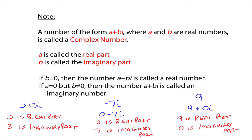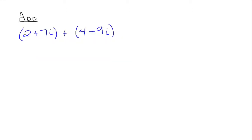Every real number we've been playing with is also a complex number — it's just that its imaginary part is 0. So our number system has been expanded: the real numbers are really a subset of the complex numbers. Every real number is a complex number, but not every complex number is a real number — for example, 2 plus 3i and negative 7i are complex numbers but not real numbers. Adding two complex numbers is straightforward: you just combine like terms. So 2 plus 4 is 6, and 7i minus 9i is negative 2i, giving you the new complex number 6 minus 2i.